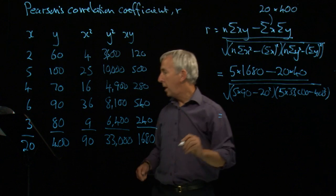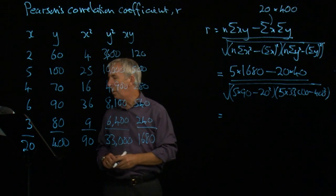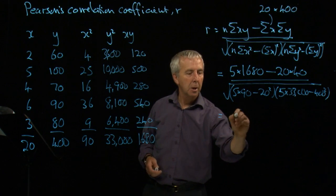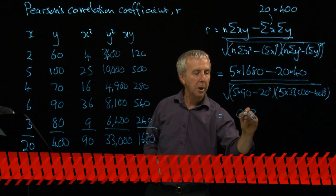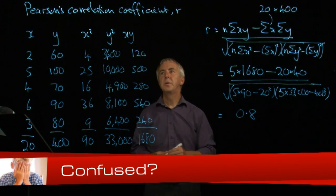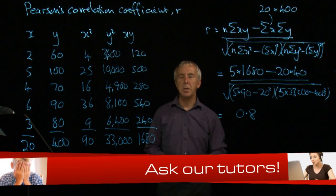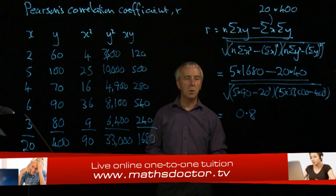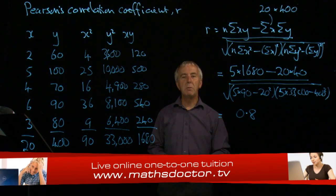And if you work all of that out, it ends up at exactly 0.8. That's Spearman's, sorry, Pearson's correlation coefficient, 0.8.